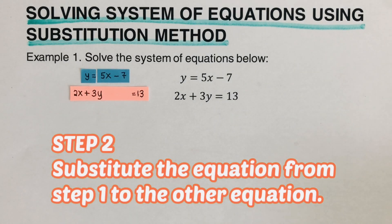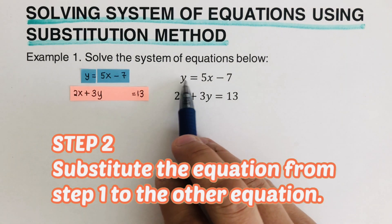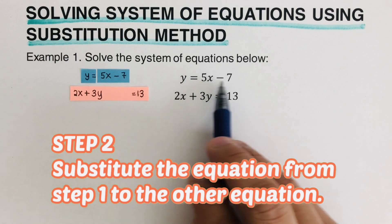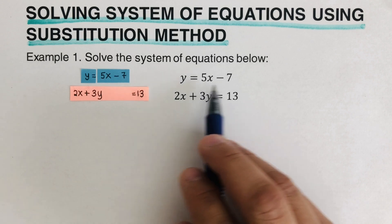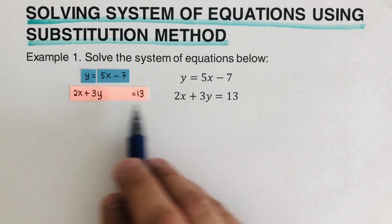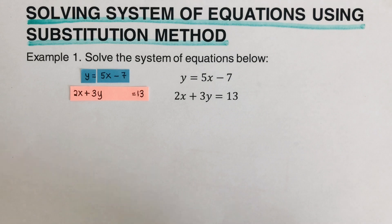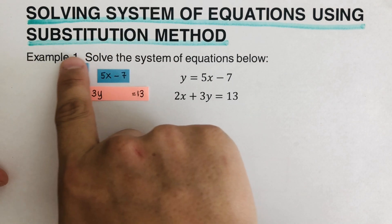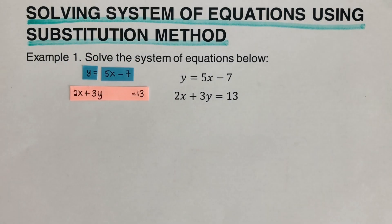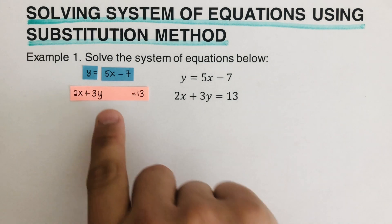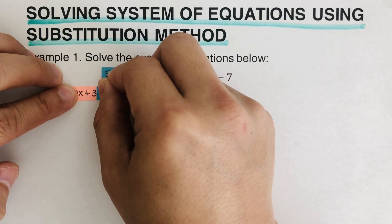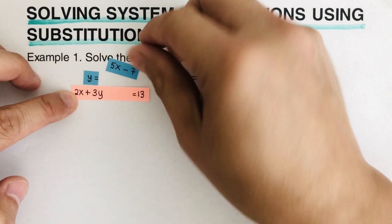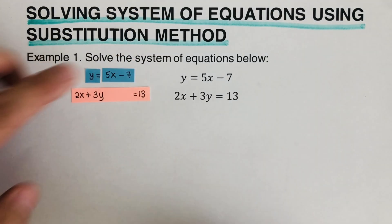Now the second step is to substitute the equation from step one into the other equation. We already have this isolated y variable. So we're going to substitute this equation into the second equation. What I'm trying to do here is that we get a y — we say that y is equal to 5x minus 7. So then the y that we have in the second equation, since this is equal to y, we can cover it and it's still y, and we know that this y is actually equal to 5x minus 7.